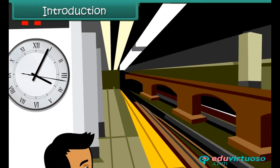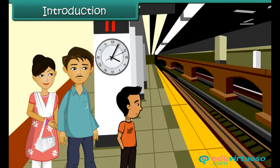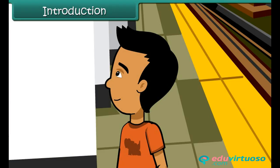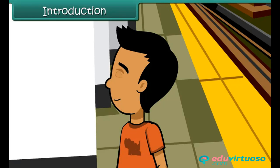Abhishek is at the railway station with his parents. They are going for summer holidays to Mathura. Their tickets are reserved on the 4:30 train. Abhishek is looking at the huge railway clock and wants to find out when the train would start.